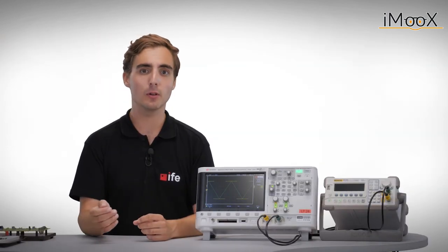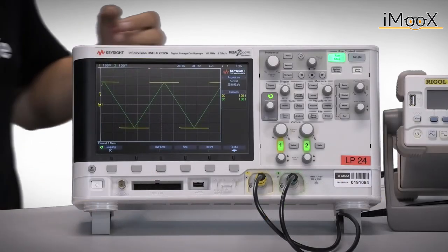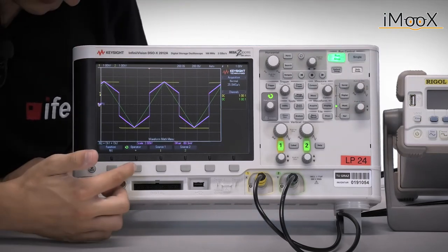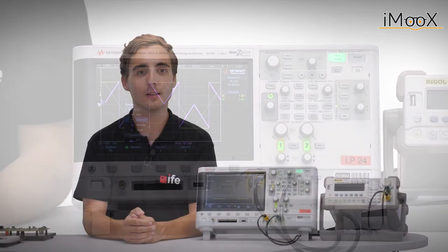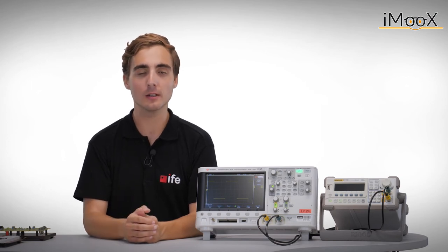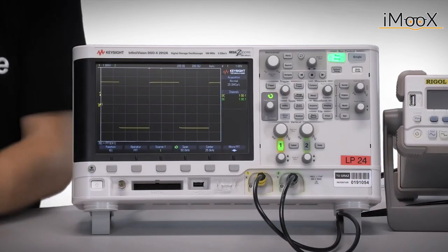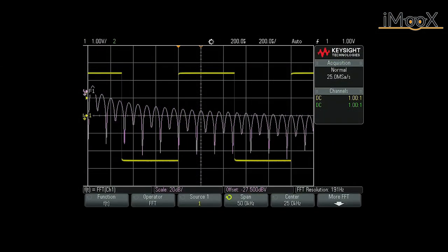To give an example, we subtract a triangular from a rectangular signal. Therefore, we go to the math menu and select the difference function. Depending on the scope capabilities, there are even more complex functions possible, such as fast Fourier transforms or FFTs. Applying the FFT to a rectangular signal will give us a sync function. You can see the main frequency and the odd harmonics.